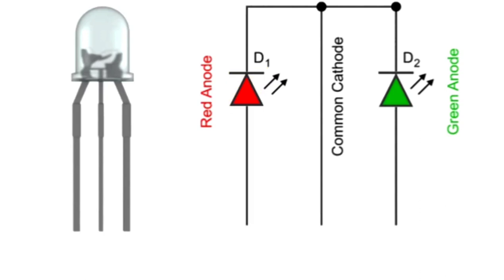However, because the two anodes are wired separately, it is possible to apply positive voltage to both wires. In this case, the LED gives off a third color, a mixture of the two.